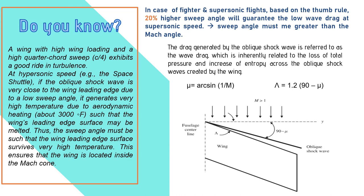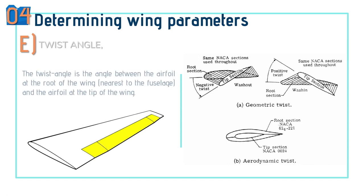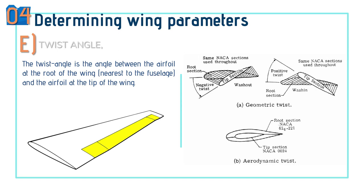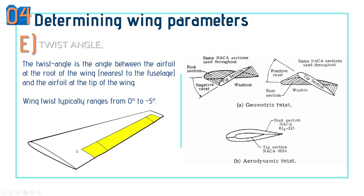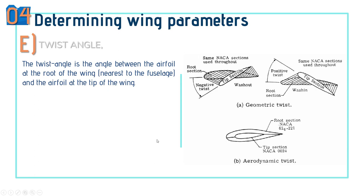Twist angle, according to standard guidelines, typically ranges between 0 and minus 5 degrees for conventional swept wings. Twist is used to avoid tip stall, which is a characteristic of untwisted aft-swept wings. Twist can be of two types: geometric twist and aerodynamic twist. Geometric twist has two subtypes: washout and wash-in. Washout is when the root chord is at zero angle of attack and the tip is at a negative angle of attack.